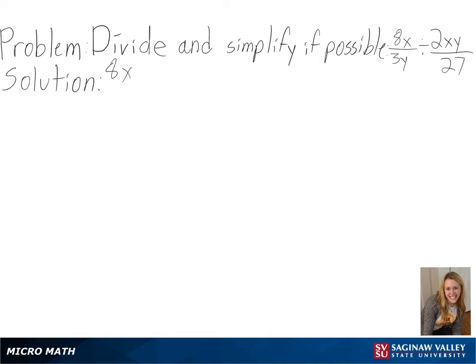Our problem is to divide and simplify, if possible, 8x over 3y divided by 2xy over 27.